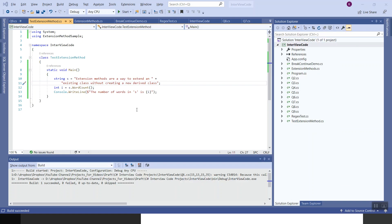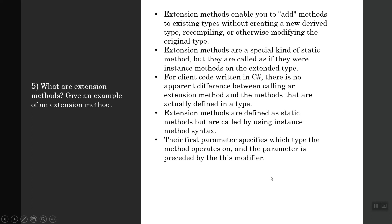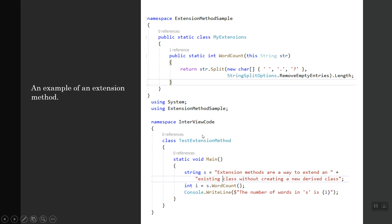Let's get back to the theory. For client code written in C#, there is no apparent difference between calling an extension method and the methods that are actually defined in a type or class. Extension methods are defined as static methods but are called by using instance method syntax. Their first parameter specifies which type the method operates on, and the parameter is specified by the 'this' modifier. Extension methods are only in scope when you explicitly import the namespace. These two things we have already seen in action. The 'this' keyword is put as a parameter and they are only in scope when you explicitly import the namespace into your source code with the using directive.